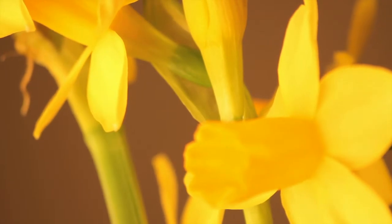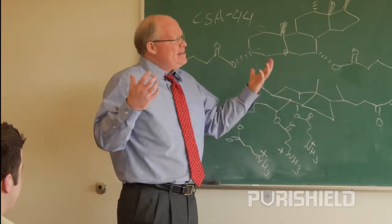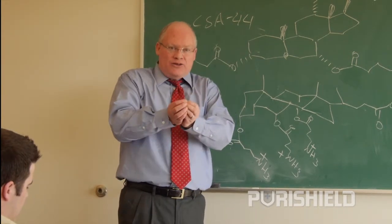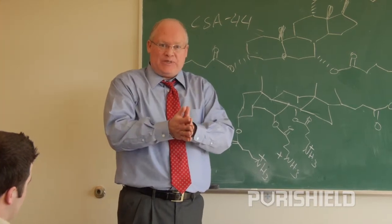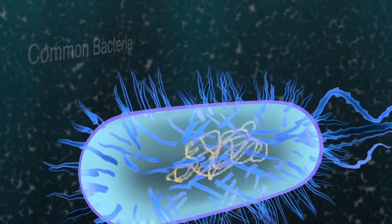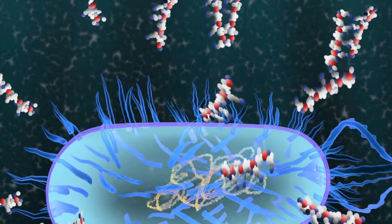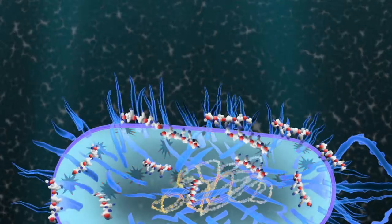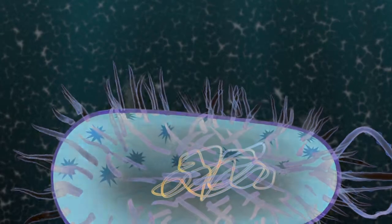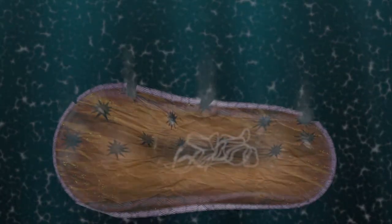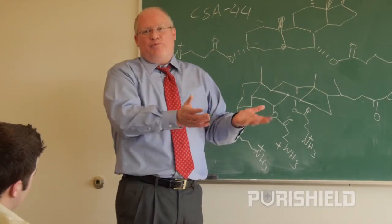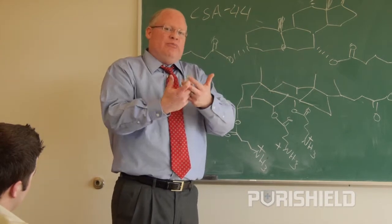The primary way that animals, plants, and humans control bacteria is with a special set of molecules called antimicrobial peptides, or AMPs.